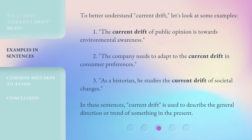To better understand current drift, let's look at some examples. 1. The current drift of public opinion is towards environmental awareness. 2. The company needs to adapt to the current drift in consumer preferences. 3. As a historian, he studies the current drift of societal changes. In these sentences, current drift is used to describe the general direction or trend of something in the present.